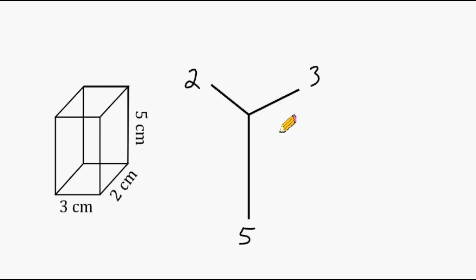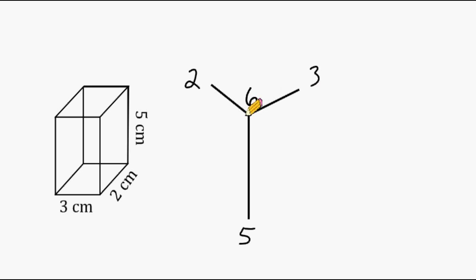Now what we have to do is just select two numbers at a time and multiply them. Let's start with the 2 and the 3: 2 times 3 is 6. We're going to write that answer where these two lines converge on each other. Next, let's do 3 times 5, which is 15. And 2 times 5 is 10.